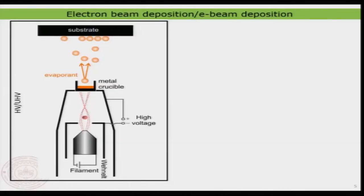The next important method is electron beam deposition, generally known as e-beam deposition. This is also a kind of evaporation technique, but it is particularly used for evaporants having much higher sublimation temperatures.